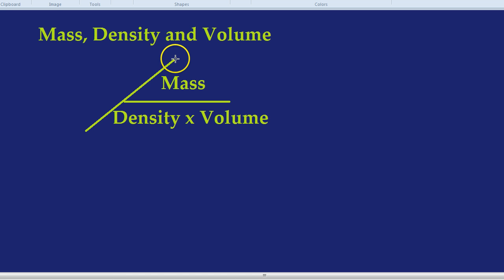Let's complete our triangle. Now, if you want to find the density or volume or mass of an object, what you need to do is simply cover up the part of the triangle that you're looking for. Say we were looking for volume, we cover up volume on the triangle. What's left over is mass divided by density. What if we were looking for the mass of an object? We would cover up mass, and we'd be left with density multiplied by volume.